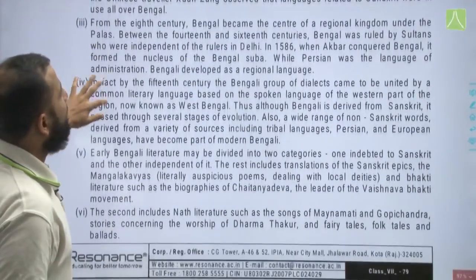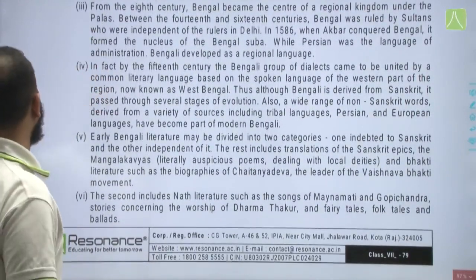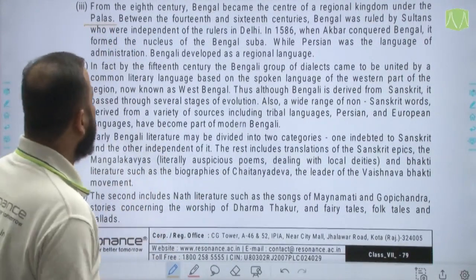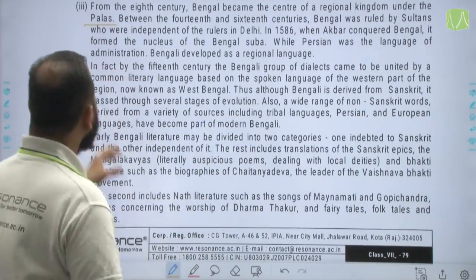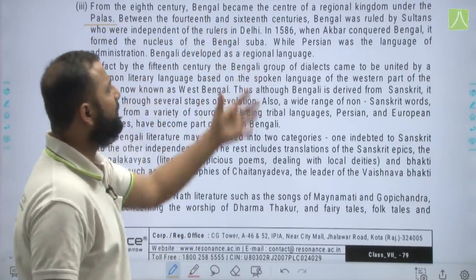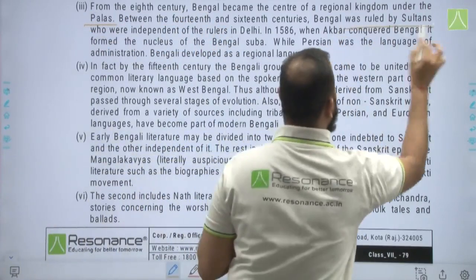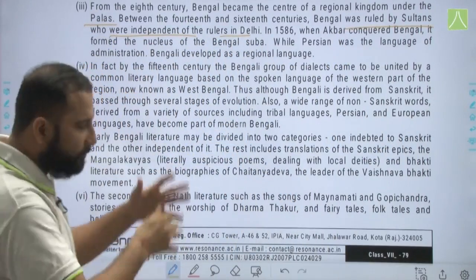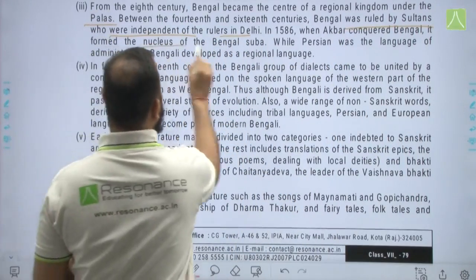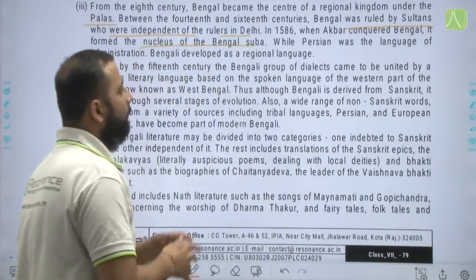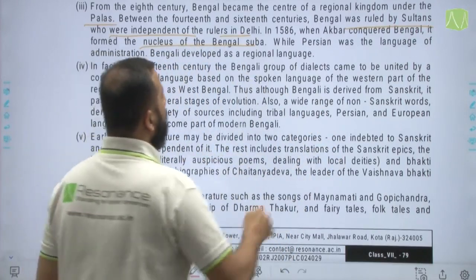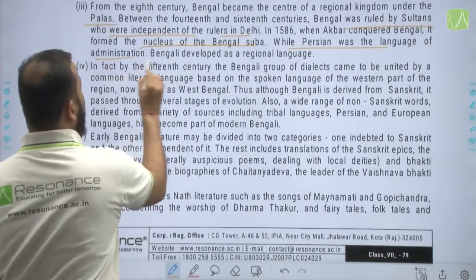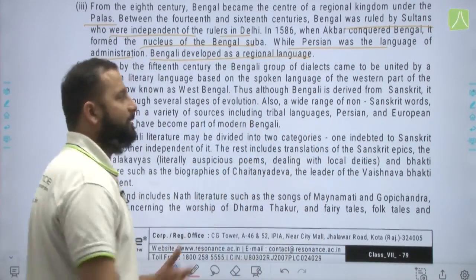From the 8th century, Bengal became the centre of a regional kingdom under the Palas. Between the 14th and 16th centuries, Bengal was again ruled by sultans independent of the Delhi rulers. In 1586, Akbar conquered Bengal and formed the nucleus of the Bengal Suba. While Persian was the language of administration, Bengali developed as a regional language during this period.